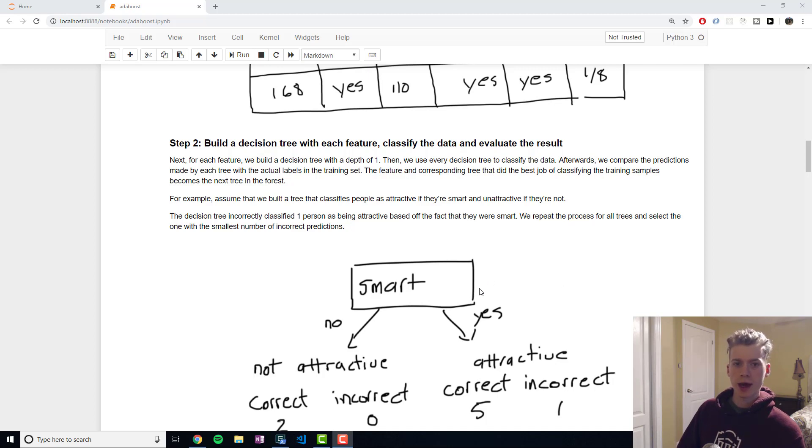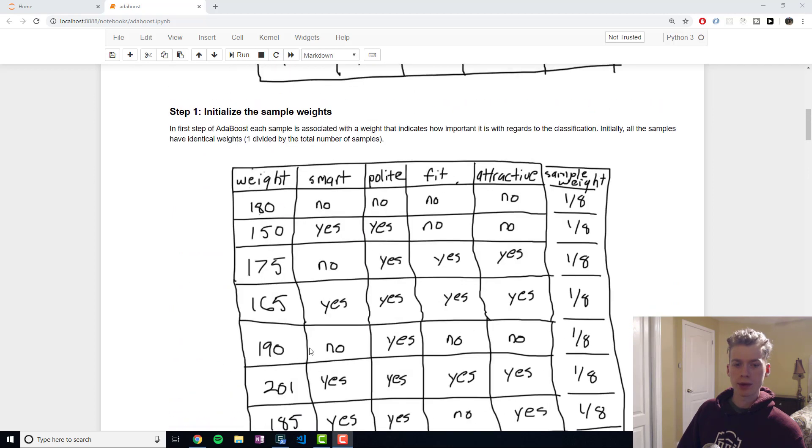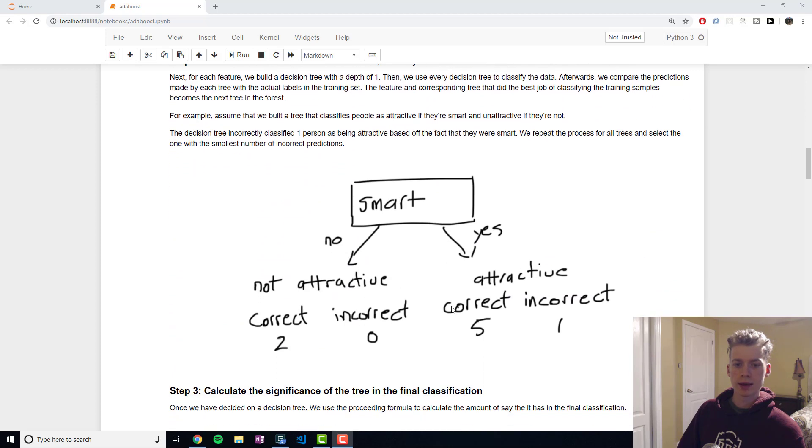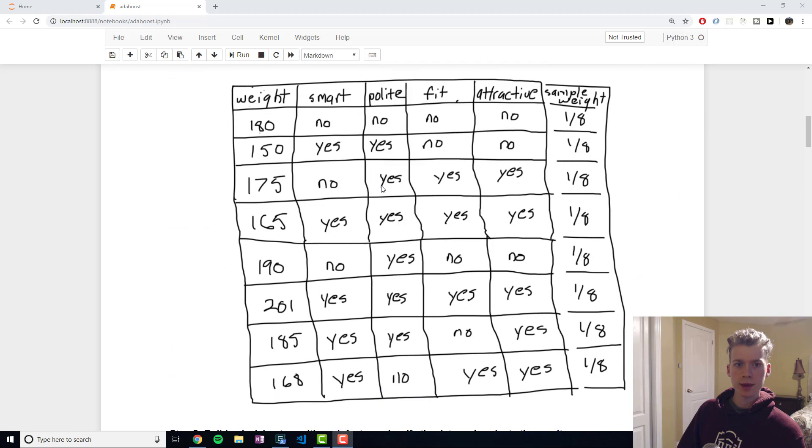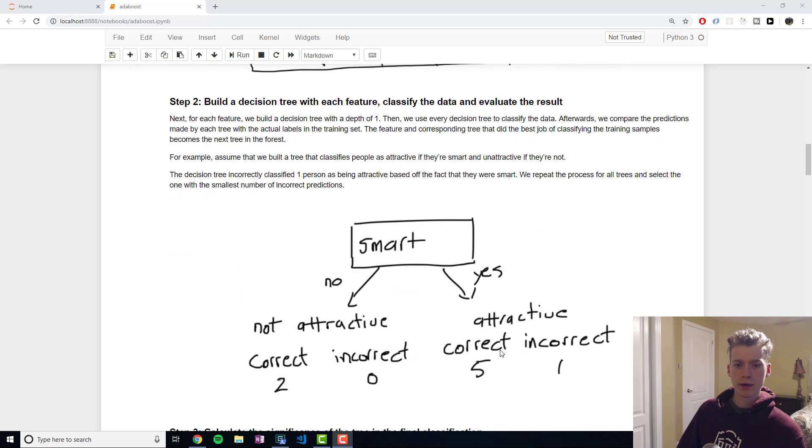We funnel every single one of these samples through our decision tree and it ends up classifying them. For five of the cases, the person was smart and they were also attractive, but for one of these cases it was not. For two samples, the person was not attractive and it predicted them as being not attractive, and that was correct. You can imagine different decision trees for each one of our features, and they would have a certain amount that they got correct and incorrect. Then we take the tree that got the least amount incorrect. We're going to assume that the smart decision tree was the best one because it only got one incorrect.